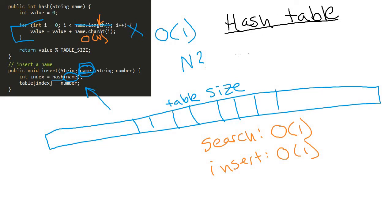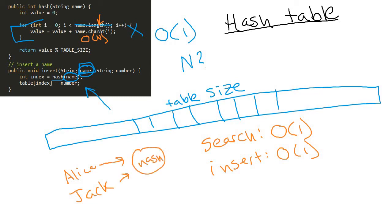Hash tables seem like a panacea — great at searching, great at inserting. But there is a problem we haven't addressed yet: what happens if your hash method gives you the exact same number for two different things? It's possible that the hash function will map two different keys to the same index. Maybe Alice and Jack both map to slot three. We know this has to be possible because in our example the table is size 117, but there are far more than 117 possible names — the hash method gives us a number between 0 and 116 for all of them, so there have to be some overlaps.